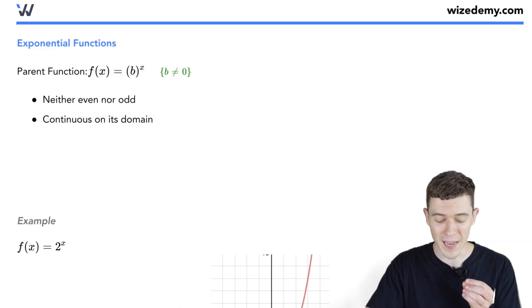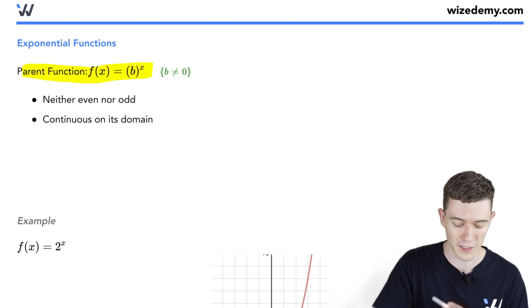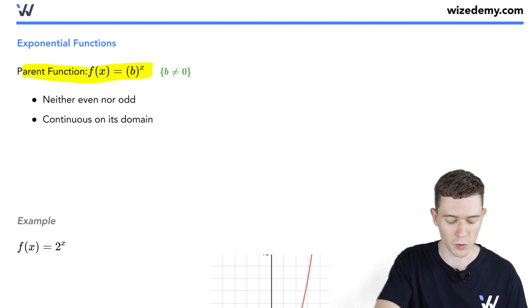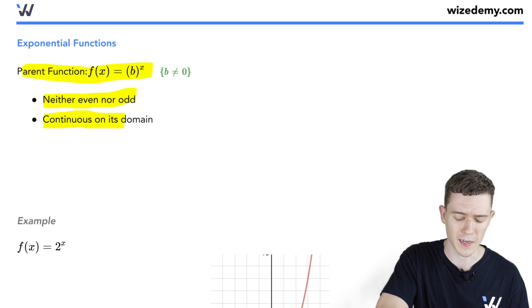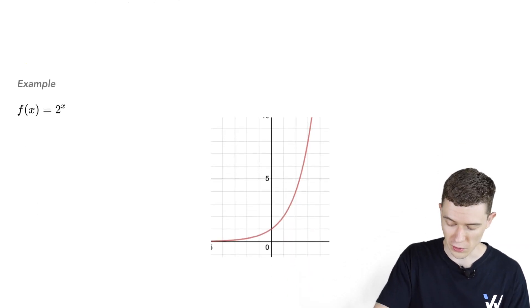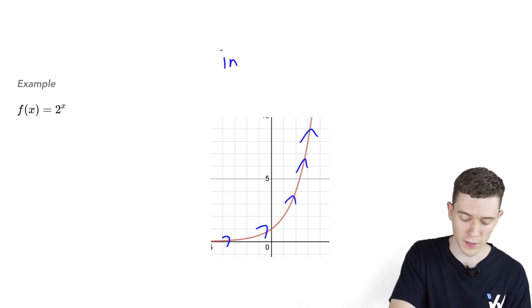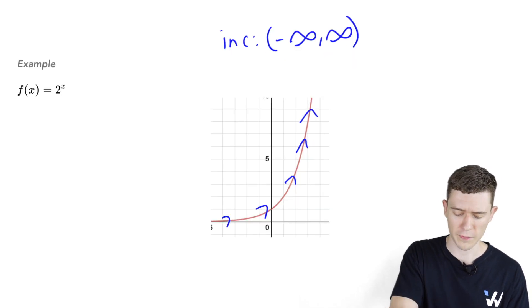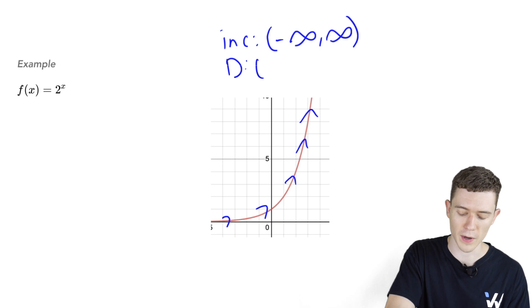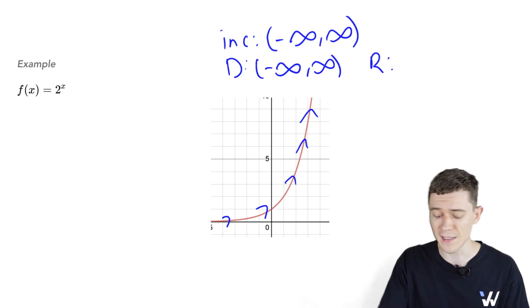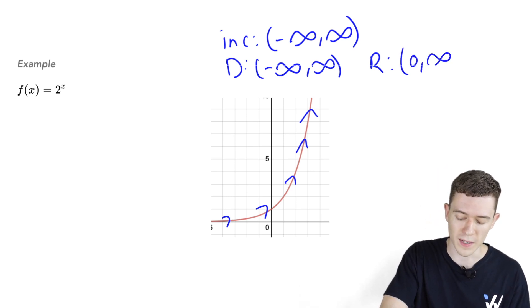Exponential functions have parent function b to the x, where b does not equal zero. It's not odd or even, but it is continuous and always increasing — as we read left to right, this function goes up and up forever, increasing on negative infinity to infinity. The domain is minus infinity to infinity. The range is zero to infinity, because we only go as low as the horizontal asymptote at y equals zero.